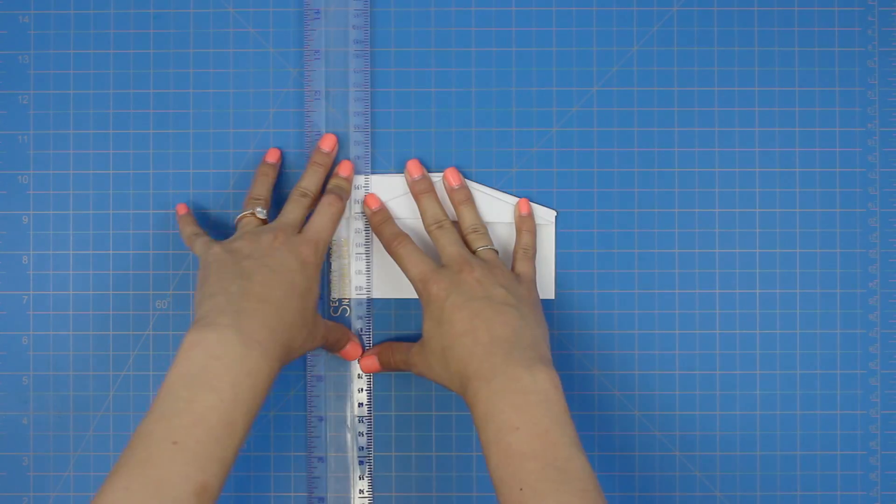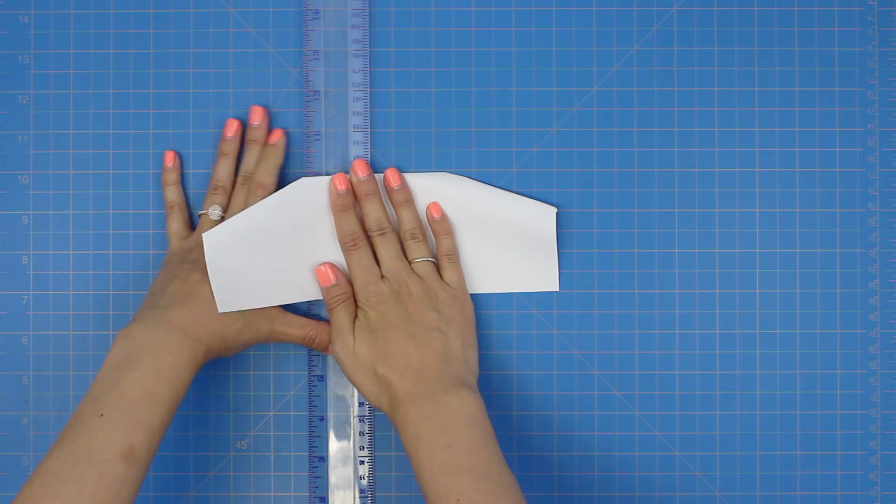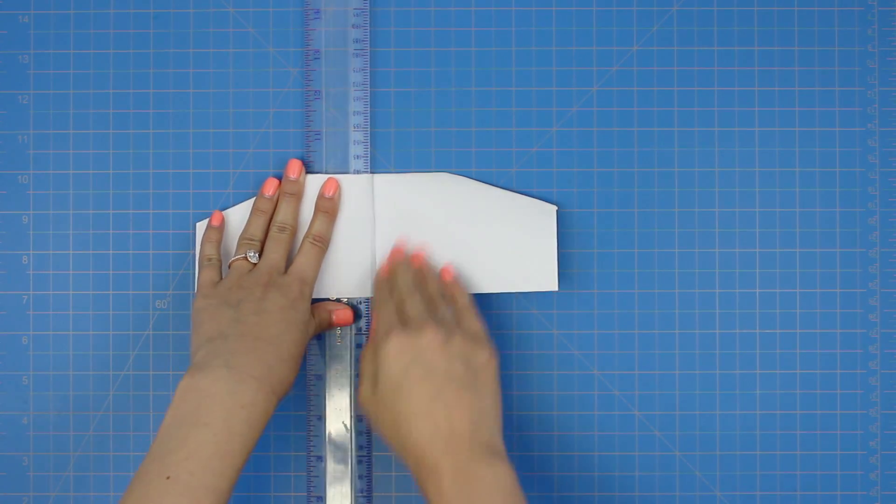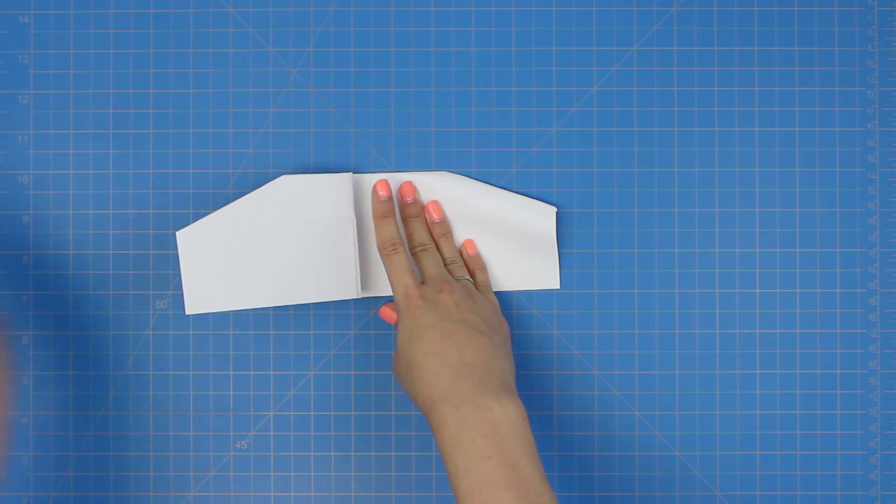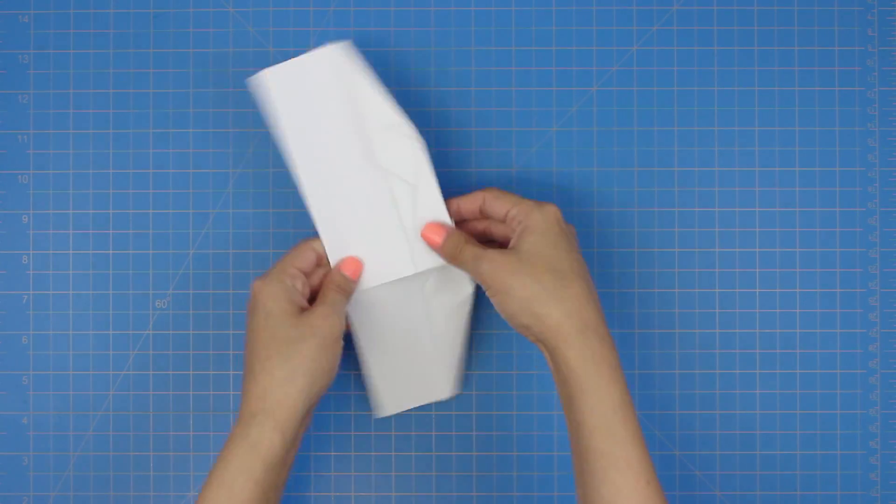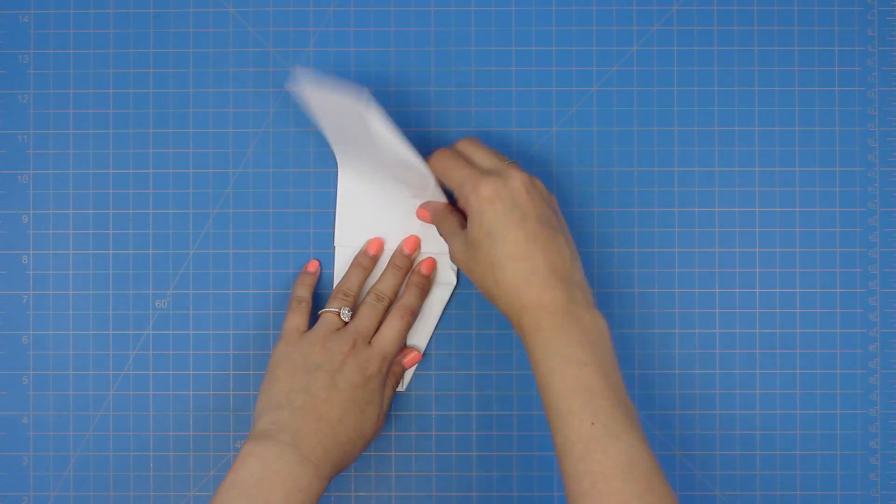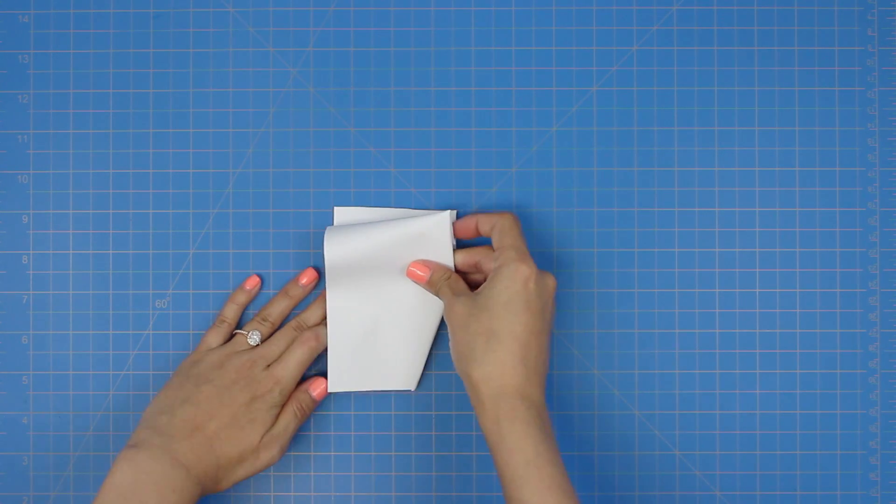Now, place the ruler about one inch from the bottom of the plane, and fold one wing down. Good! Now make sure the second wing matches up with the first wing.